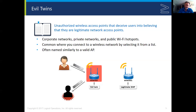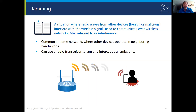Rogue access points and evil twins are similar in purpose but differ in where they are placed, which is why they are named differently. Next is jamming. Wireless networks and Bluetooth are nothing more than radio waves, and an attacker may, for example at a place like a Starbucks with public open Wi-Fi, jam the signals — which could force users onto their evil twin access point.